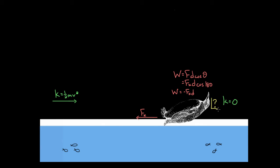But this still doesn't answer Walter's question: where did the kinetic energy go? Friction may have done negative work on this penguin, but where did that energy end up? When two surfaces rub together, some of that energy of motion is going to get transformed into thermal energy in those two surfaces. This sheet of ice is going to have a little more thermal energy — it's going to heat up just a little bit. And Walter's feathery coat is going to heat up just a little bit, just like when you rub your hands together vigorously on a cold day to get warm, turning kinetic energy into thermal energy.